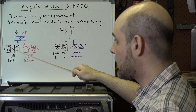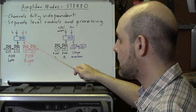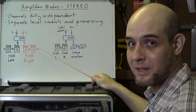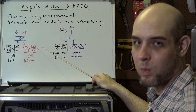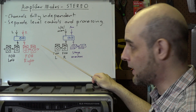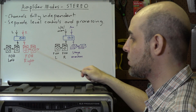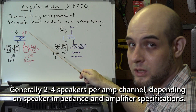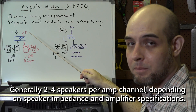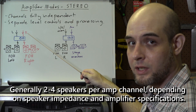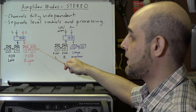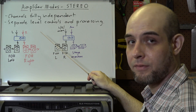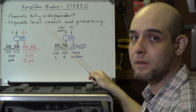The output of channel one goes to front of house left and channel two to front of house right. I've shown four speakers here, but you could run any number — one speaker aside for a small system or more depending on the coverage needed. The key point is that left and right are completely independent with their own level control and processing.